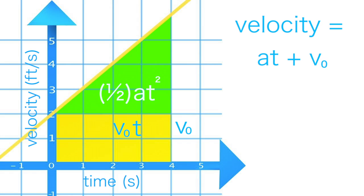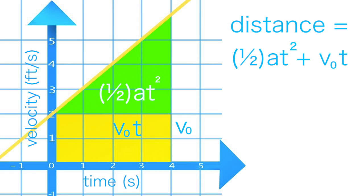Now if we add these two areas together to get the total distance equation, we get one-half times acceleration times time squared plus the initial velocity times time.